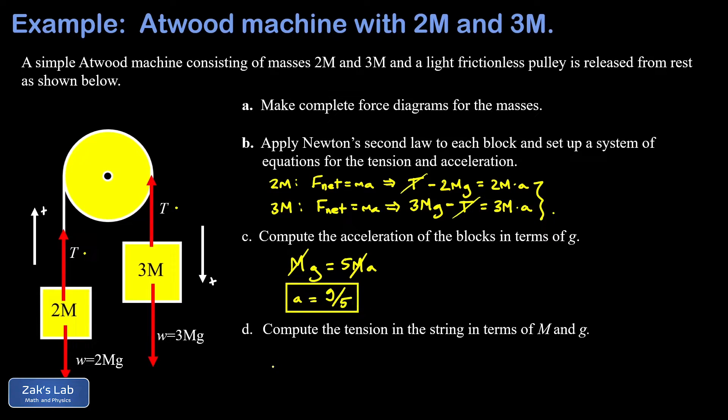Finally, in Part D, we're asked to get the tension in the string in terms of m and g. Now that we have the acceleration, all we have to do is sub that back in to either one of the equations that we developed in Part B, and we can solve for t. And I'm going to go ahead and do this in the top equation. That was T minus 2mg equals 2ma. And I'll go ahead and solve for t. This gives me 2m on the right-hand side, factored out, of g plus a. Now I sub in the acceleration that I found in Part C. That's g over 5.